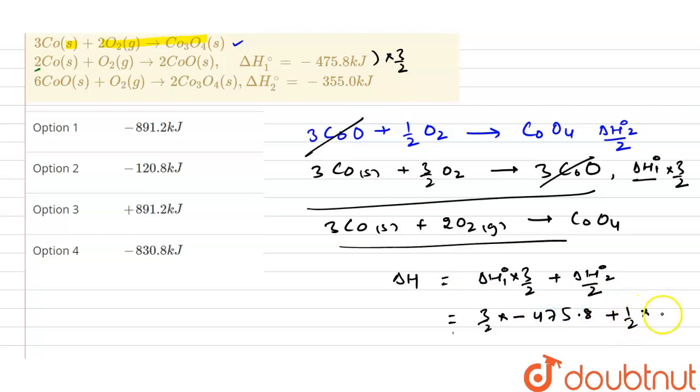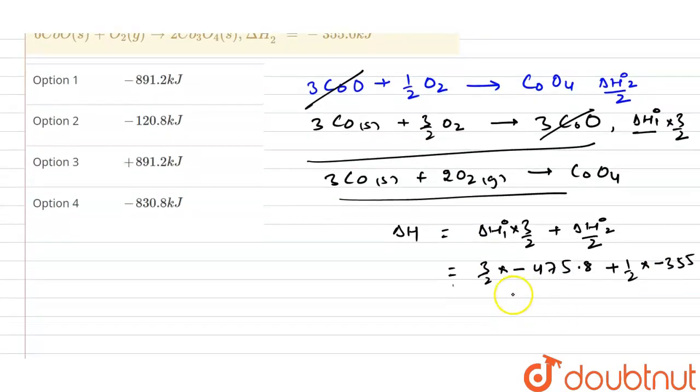So ΔH° is given how much? That is given three by two times minus 475.8 and this value is given one by two times minus 355. Now we have to calculate this value.